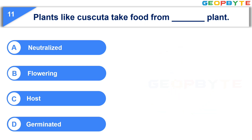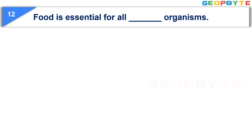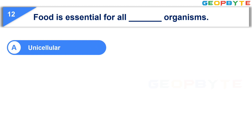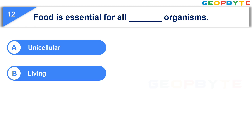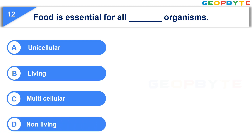Your time is up and the correct answer is Option C, Host. The twelfth question is: Food is essential for all dash organisms. Option A: Unicellular. Option B: Living. Option C: Multicellular. Option D: Non-Living. Your time starts now.